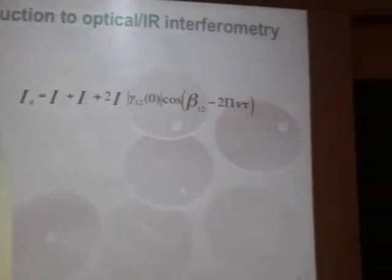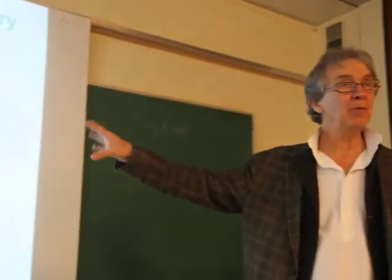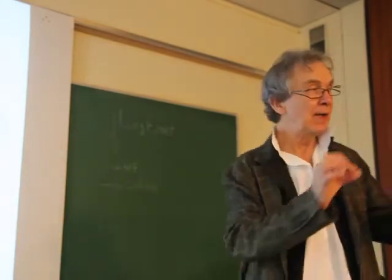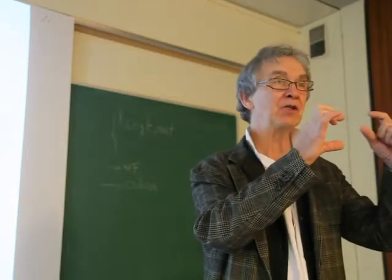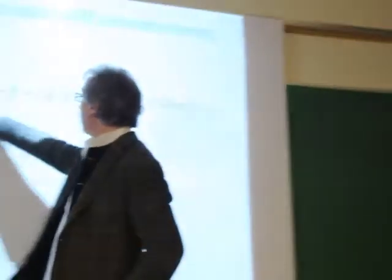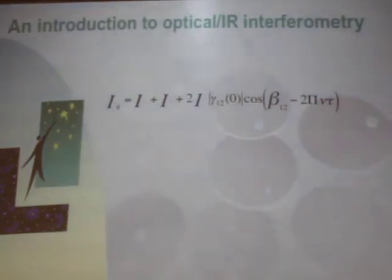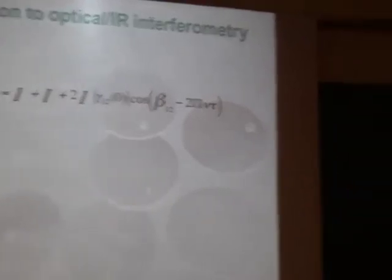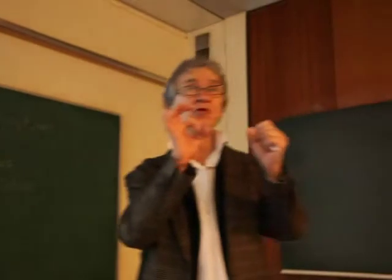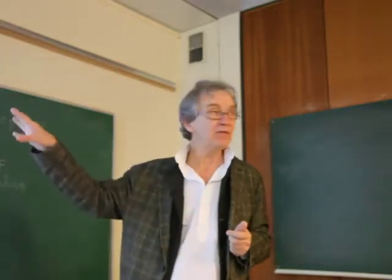In the context of the experiments you will be performing, it would also be interesting to establish the same expression in case the two apertures do not have exactly the same dimensions — maybe one is a bit larger than the other. So here you will see I₁ plus I₂ plus et cetera. When we make the experiment, maybe the two small apertures don't have exactly the same size, so we have to account for that. This is an example of a contribution you could bring.